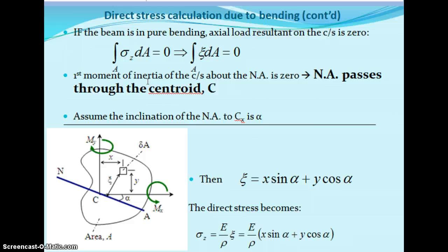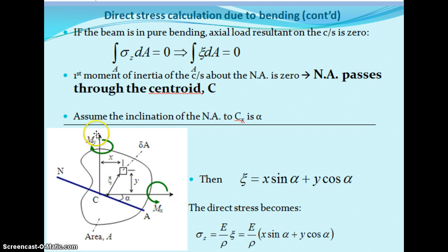For pure bending, since the integral of sigma_z·dA equals zero, if we substitute the sigma z value from the previous equations we get the integral of ζ/ρ·dA equals zero. This means the first moment of inertia of the cross section about the neutral axis is zero, so the neutral axis passes through the centroid C. We assume the inclination of the neutral axis with Cx is alpha. The zeta value is given by: zeta equals x·sin(alpha) plus y·cos(alpha).